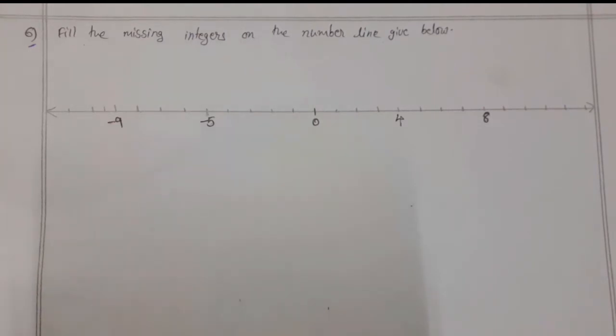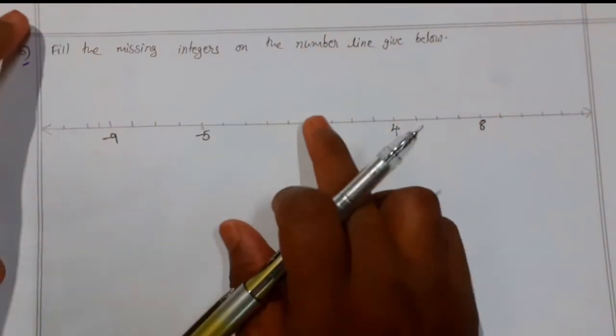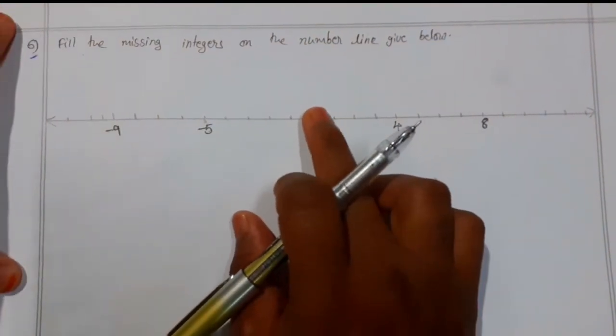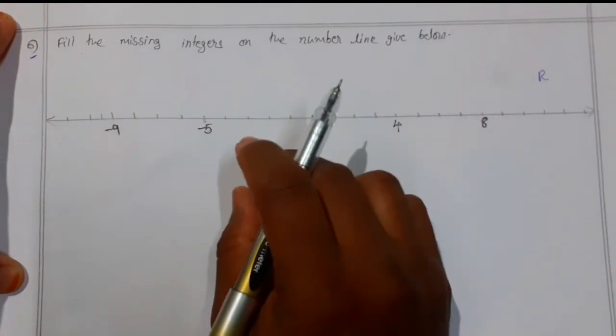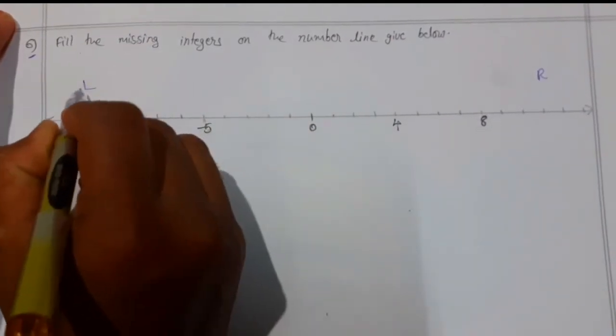For that, what we need to observe: zero towards the right side will be having positive numbers, and towards the left side of zero will be having negative integers.